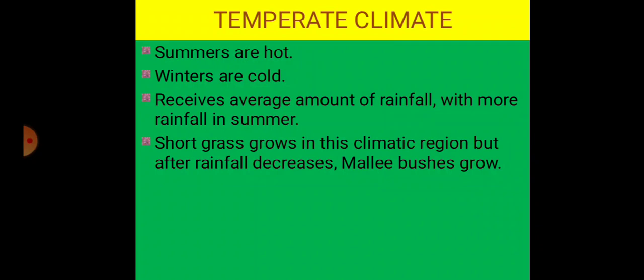The temperate climate region has hot summers and cold winters. This region receives an average amount of rainfall in other seasons, but during summer there is more rainfall. Vegetation like Mallee bushes and short grass grows in this climatic region.